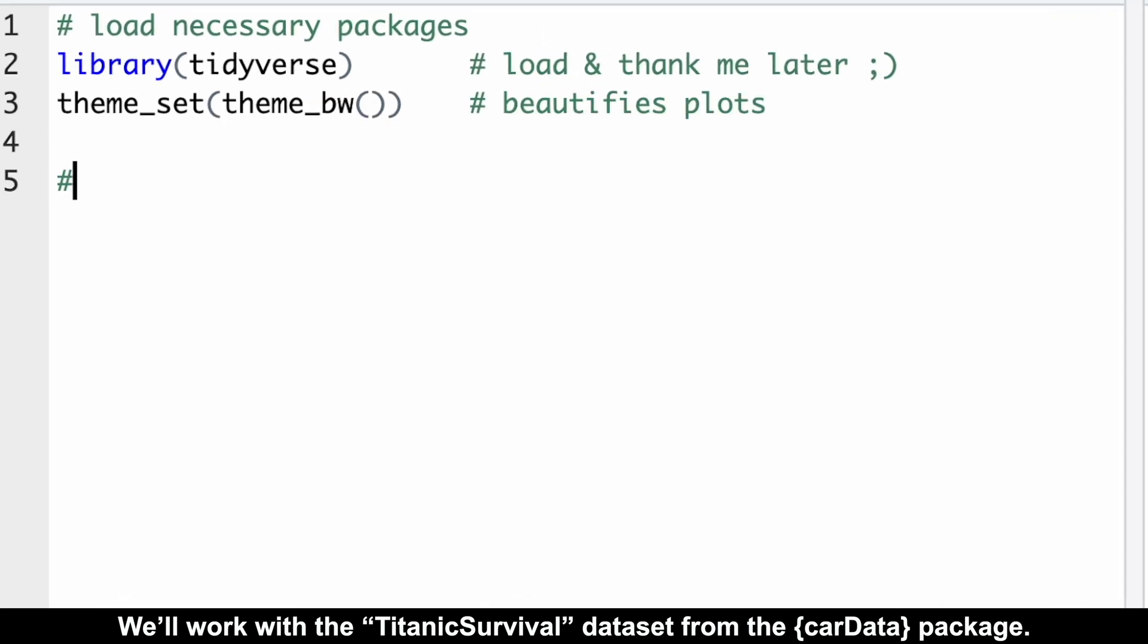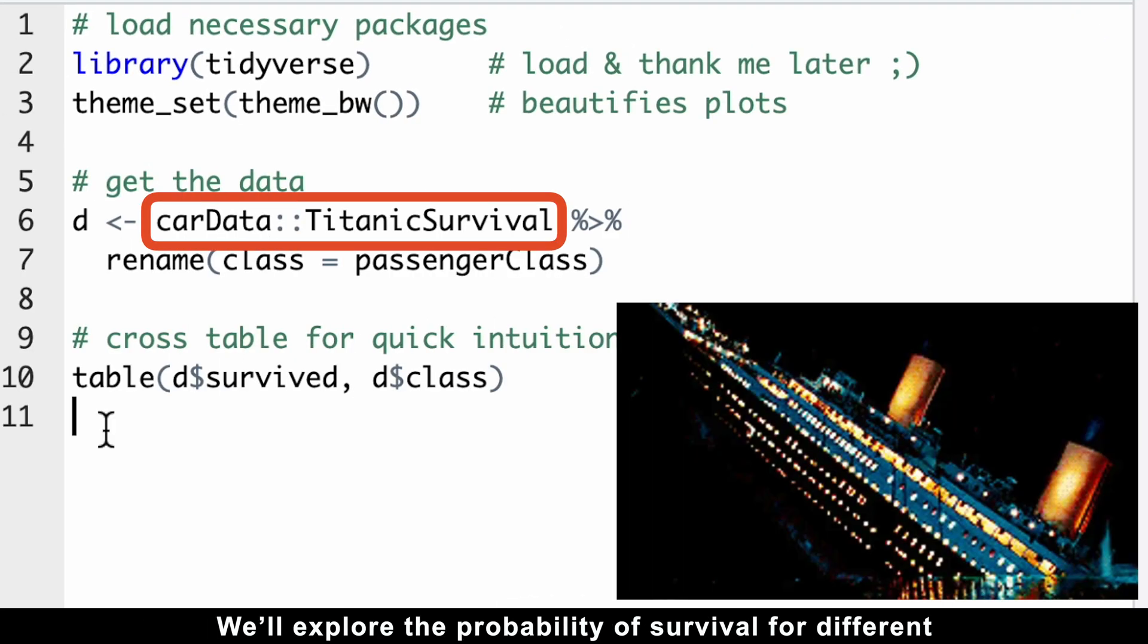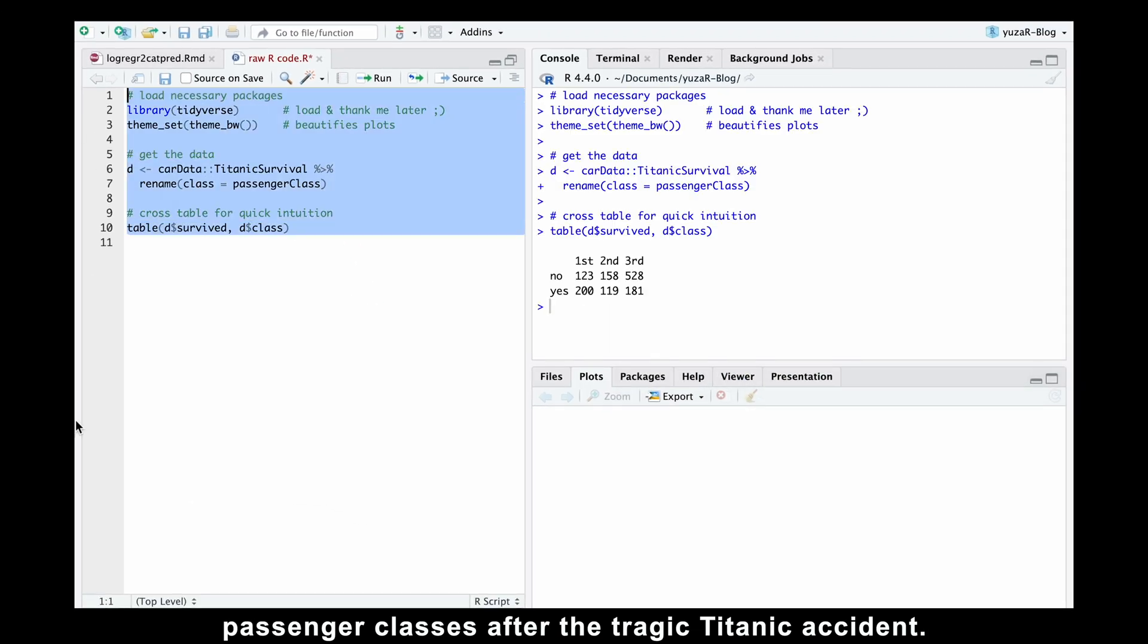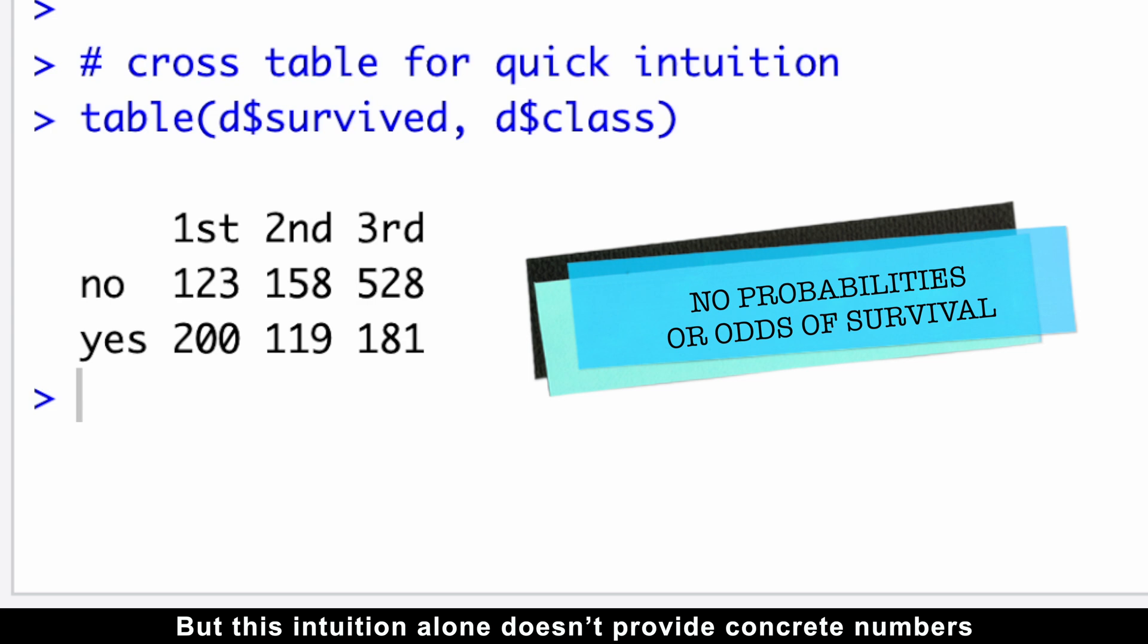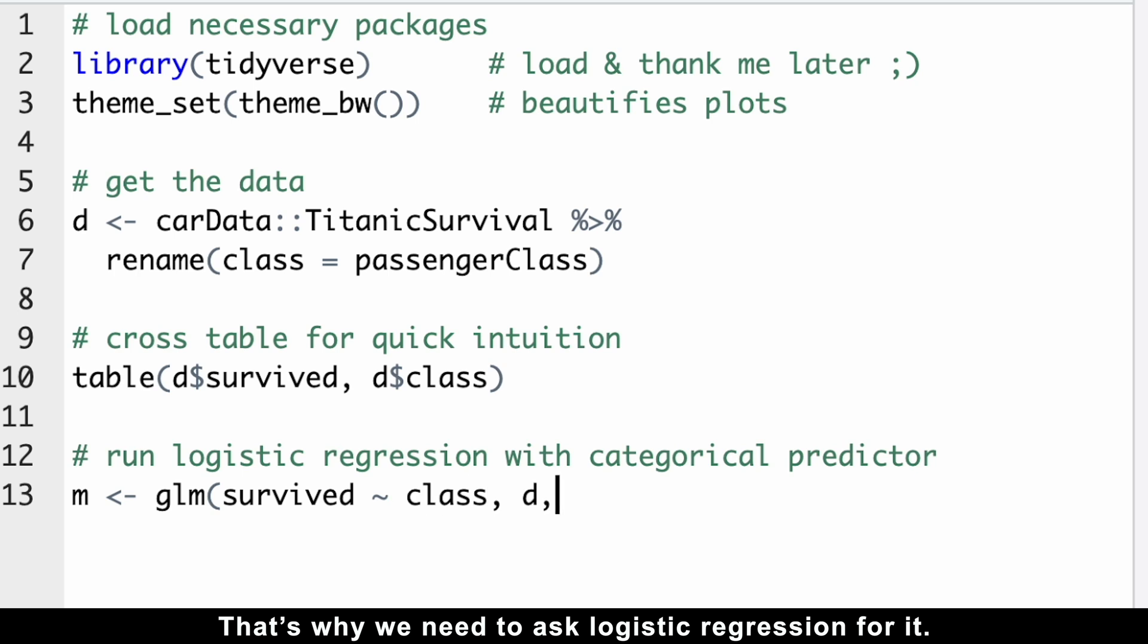We'll work with the Titanic survival dataset from the CarData package. We'll explore the probability of survival for different passenger classes after the tragic Titanic accident. A quick glance at the simple cross table already reveals that more people from the first class survived than died, while many more people from the third class perished.